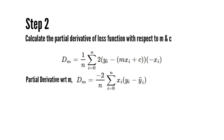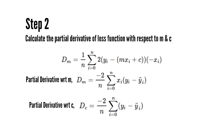Similarly, for the partial derivative with respect to c, we differentiate and get: dc = −(2/n) × Σ (yᵢ − ȳᵢ). The only difference between the two equations is that the dc equation does not have the xᵢ term.